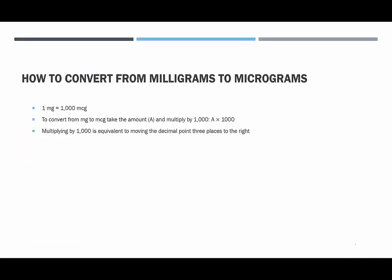How do we convert from milligrams to micrograms? One milligram is 1,000 micrograms, remember these micrograms are itty bitty. To convert from milligrams to micrograms, take the amount and multiply by 1,000, multiplying by 1,000 is equivalent to moving the decimal point three places to the right.